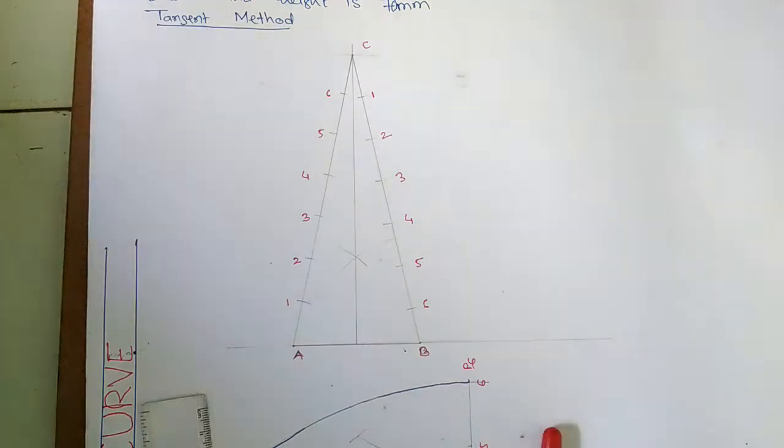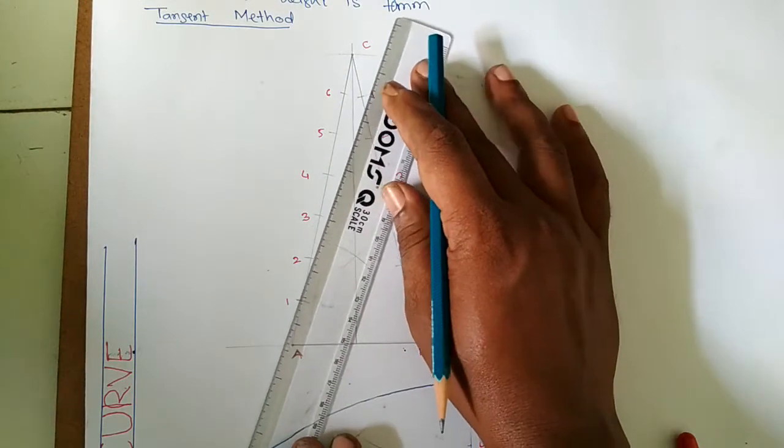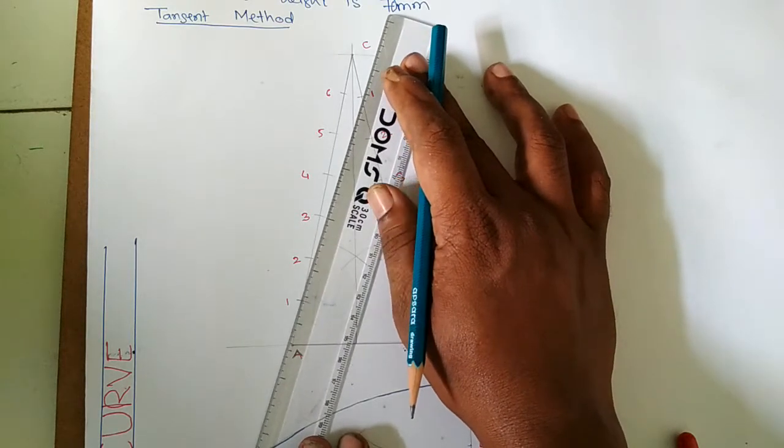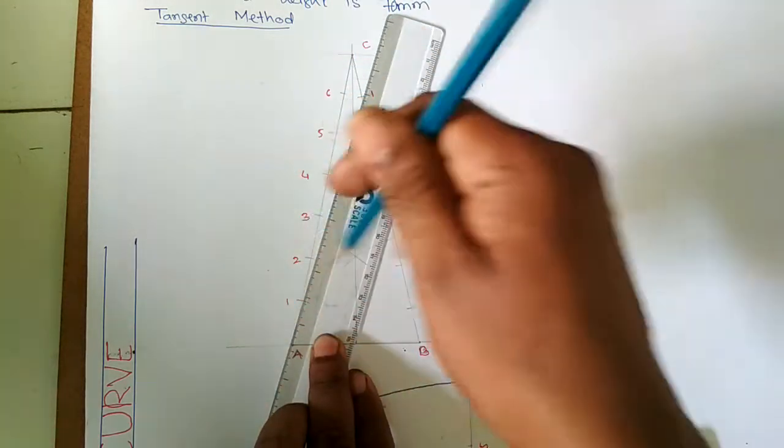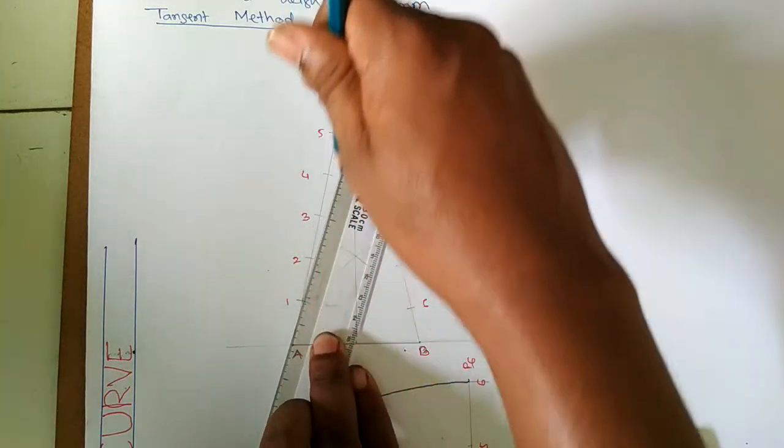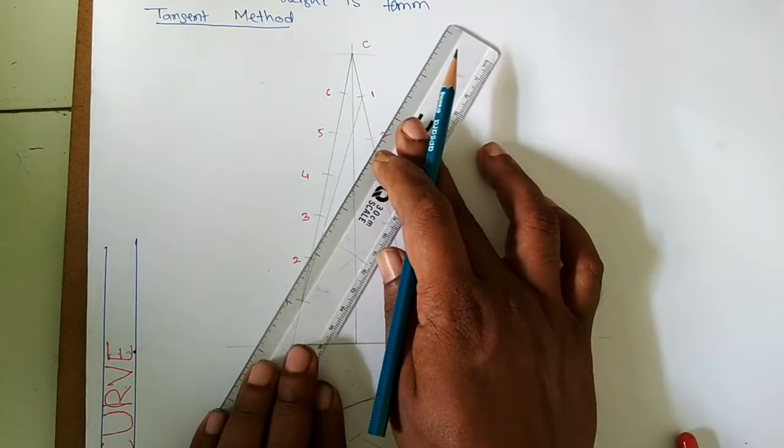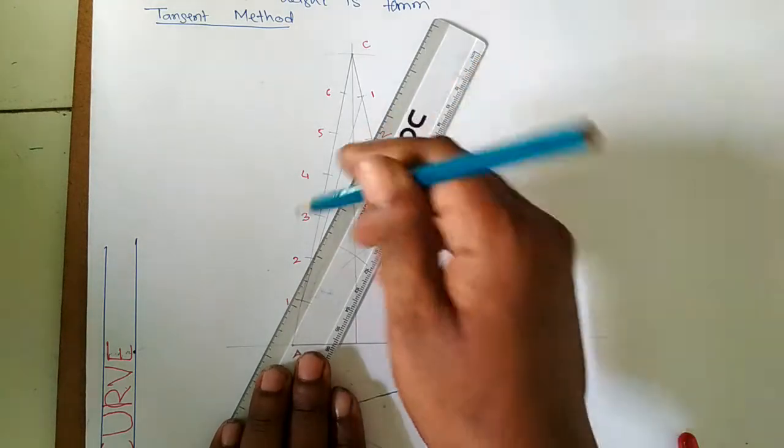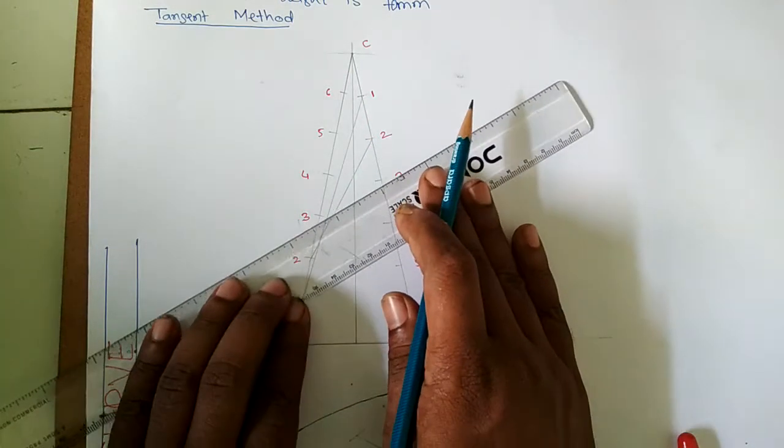Now we join the similar points. 1-1 will join. Now we join 2-2.